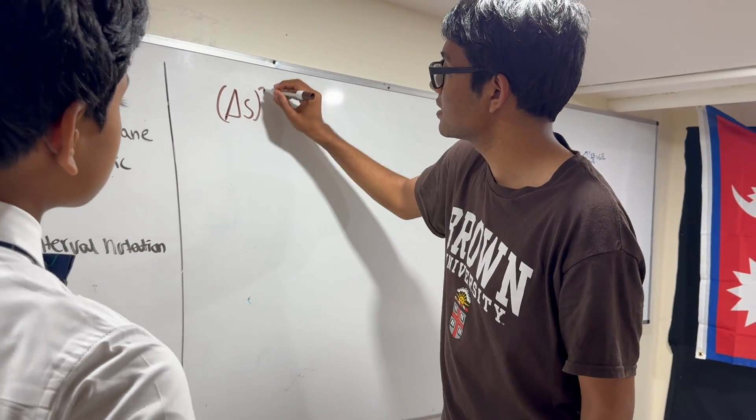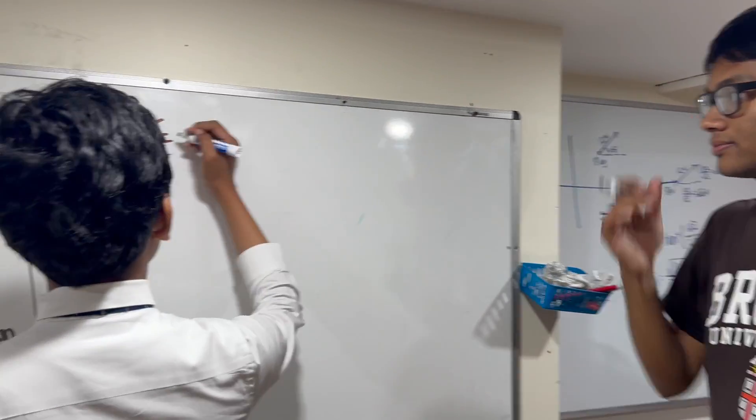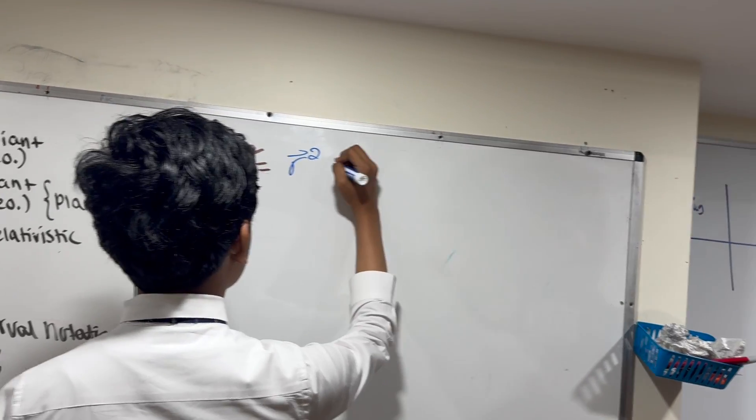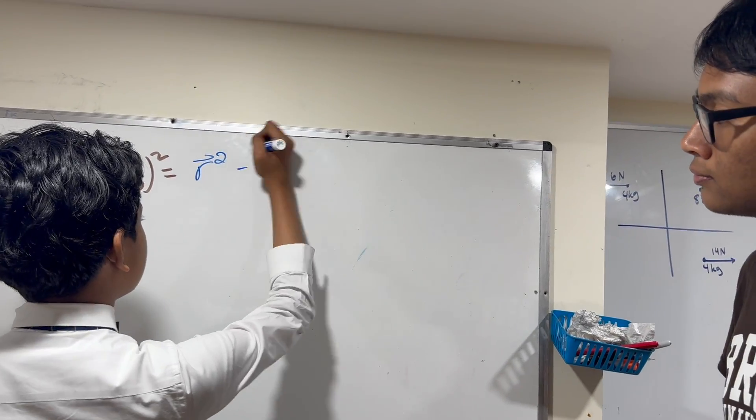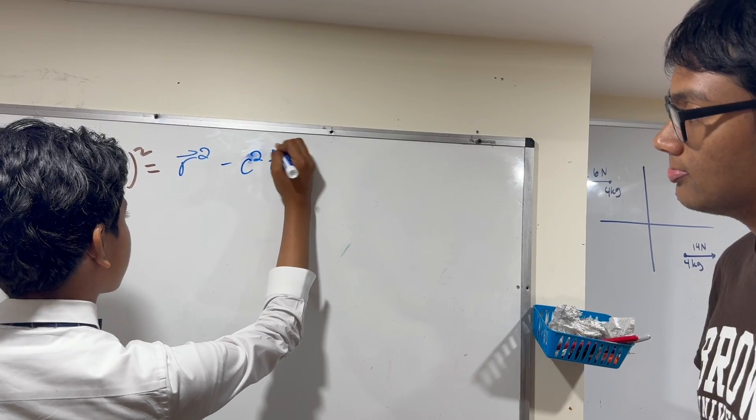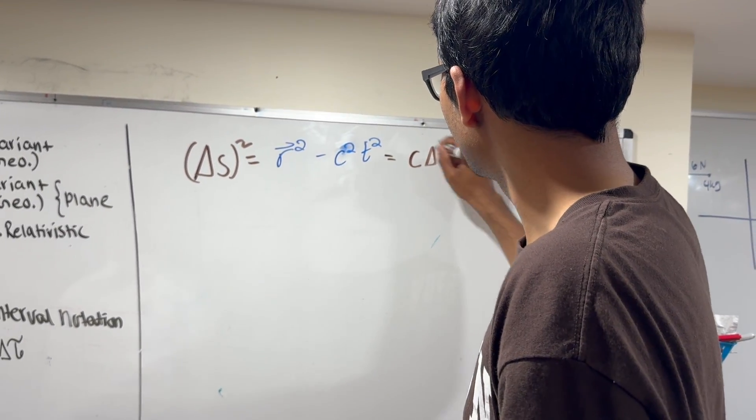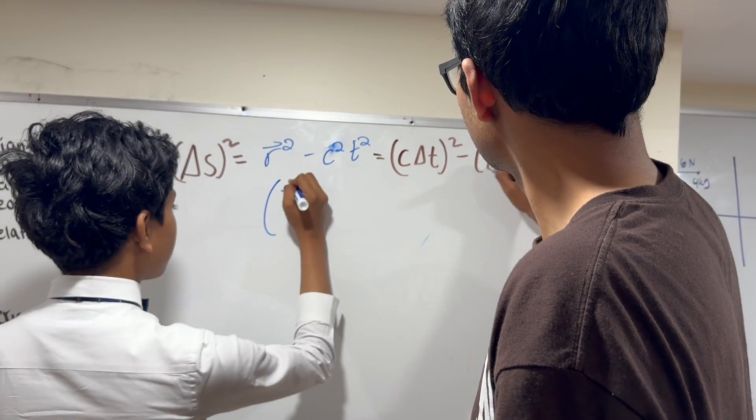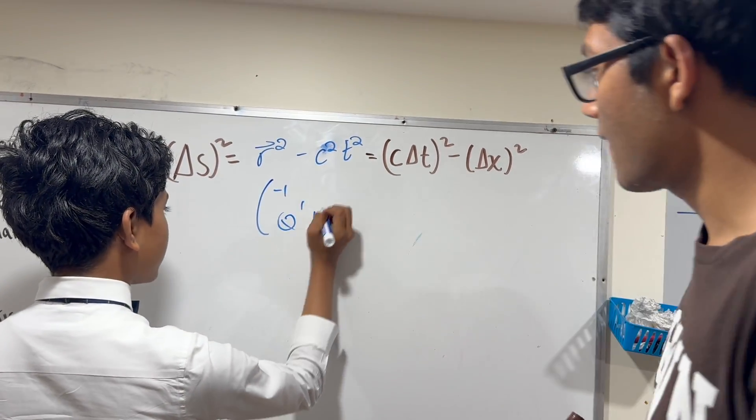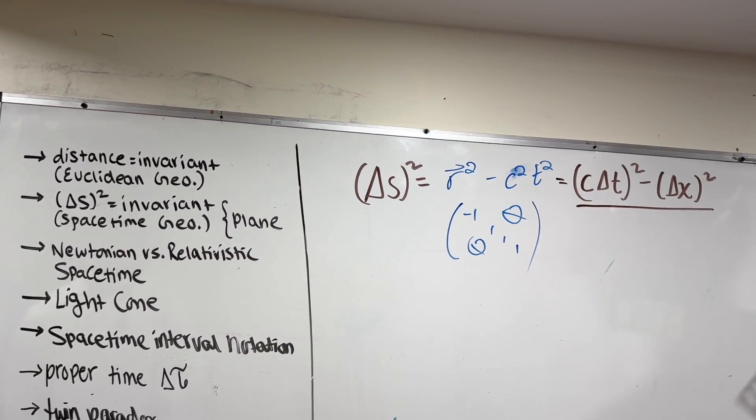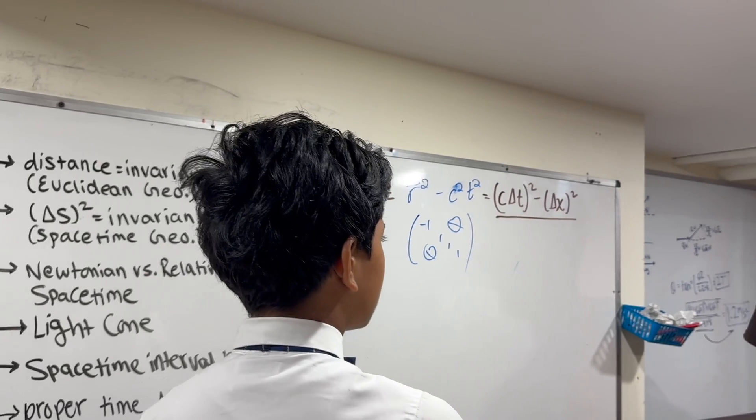The space-time interval, can you write down what it's defined as? The space-time interval is just the magnitude of the distance vector minus c squared, c squared. Depends on how you define the metric. You can also define it in the opposite. Yes, but I believe the convention that Sean Carroll uses is the minus plus plus plus. This is the minus plus plus plus.